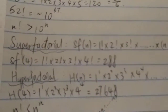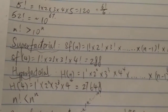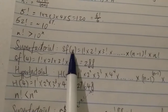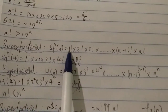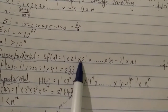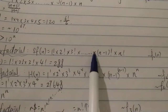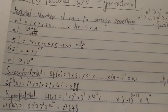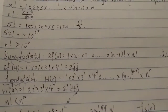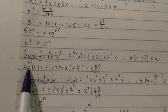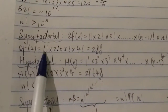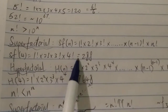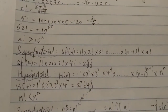Now let's look at the super factorial. The super factorial, sf(n), equals 1! × 2! × 3! × ... × n!. As you can see, it's based on the factorial function and clearly grows faster than it. For example, sf(4) = 1! × 2! × 3! × 4! = 288, which is obviously bigger than 4 factorial.